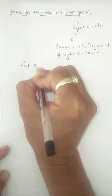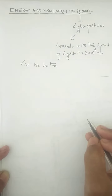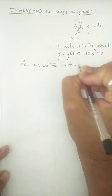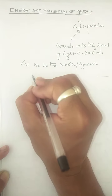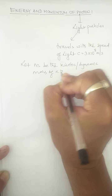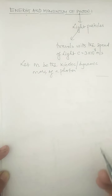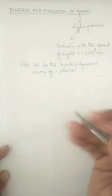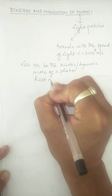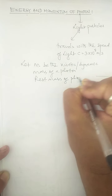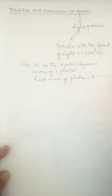Every photon has a mass. Let M be the mass of the photon, but this mass is not a rest mass — this is the kinetic mass, also called dynamic mass, because kinetic and dynamic are related to motion. This is the moving mass. Let M be the kinetic or dynamic mass of a photon. The rest mass of a photon is always zero, because a photon can never remain at rest.